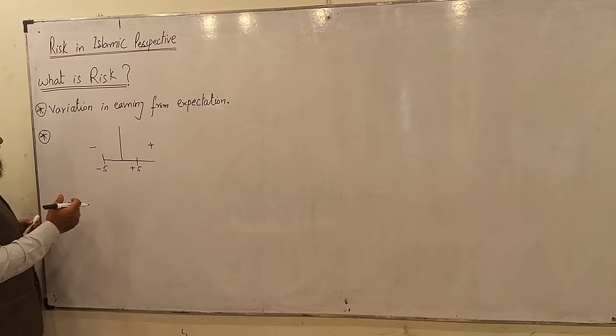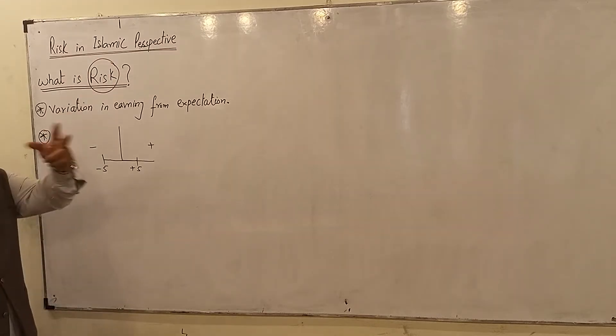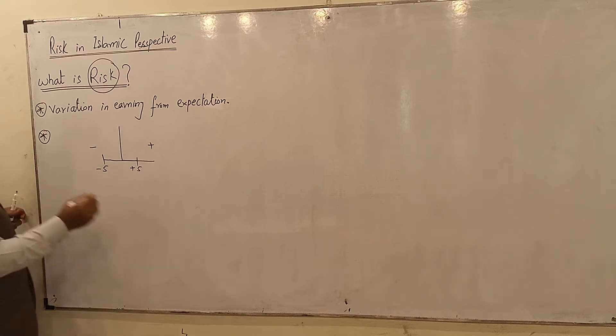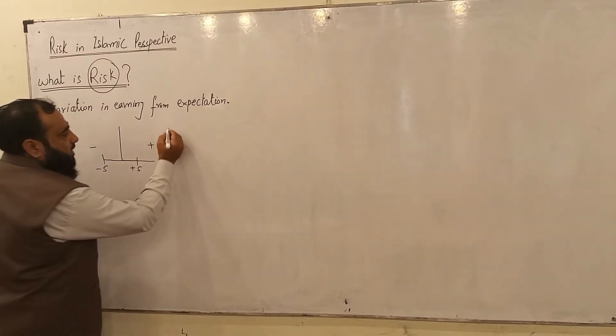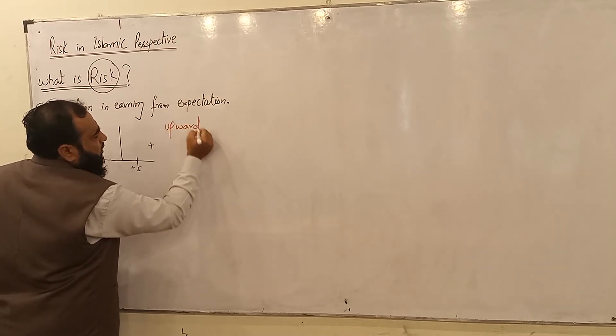So the literature, that is why, divides this risk into two types. They say that if it moves into the positive side, they call it upward risk.